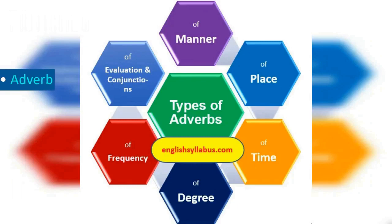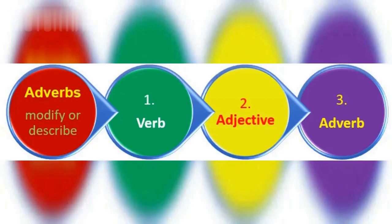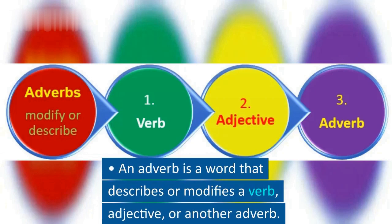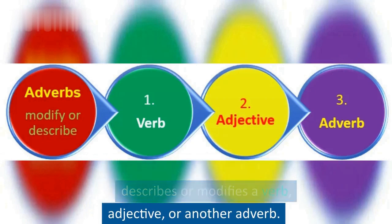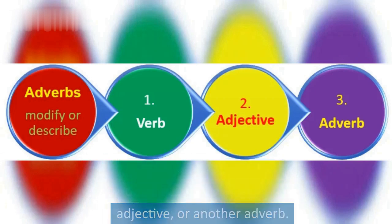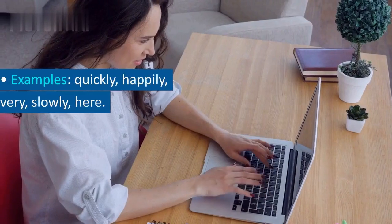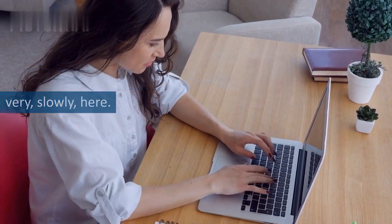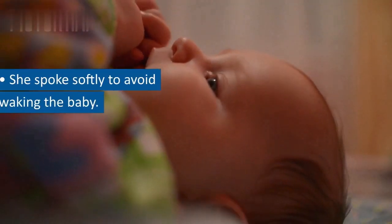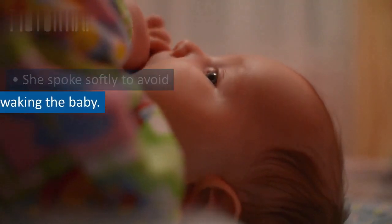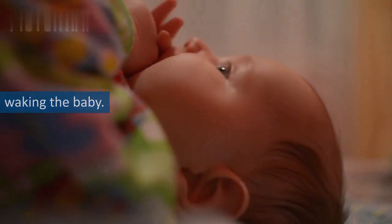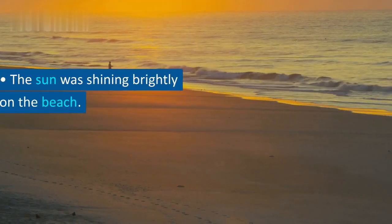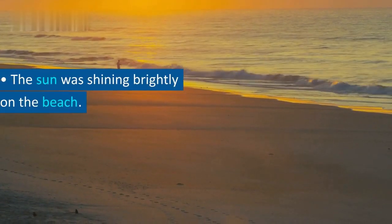Adverb. An adverb is a word that describes or modifies a verb, adjective, or another adverb. Examples: quickly, happily, very, slowly, here. She spoke softly to avoid waking the baby. The sun was shining brightly on the beach.